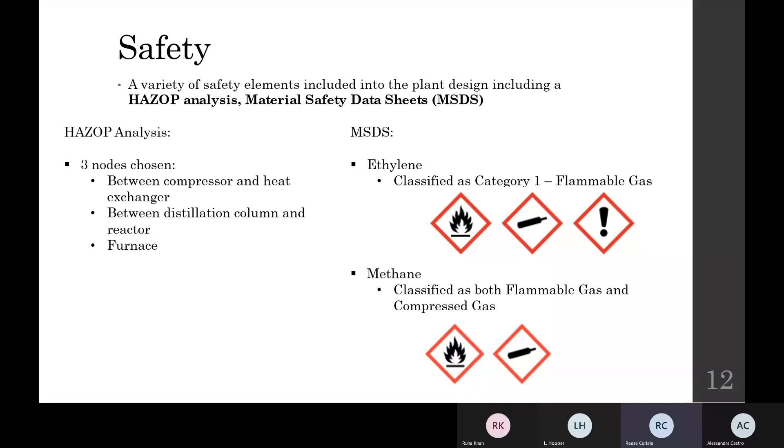These chemicals are ethylene and methane. Three different nodes were chosen for the HAZOP analysis and various deviations were evaluated to ensure system responses maintain the safety of those working in or around the plant. The storage, handling, and transport of chemicals is also an area of concern, as the chemicals produced are both extremely flammable and compressed gases.